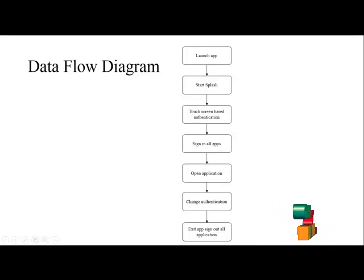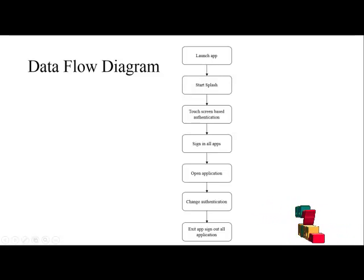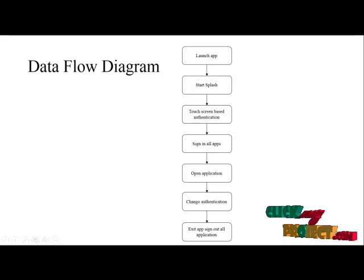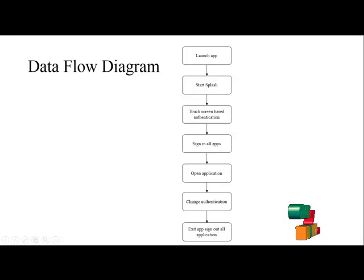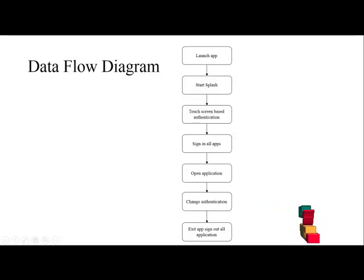Then, open all the applications in the list view. In the list view, we have to show the multiple applications which are available in the mobile, which are installed in the mobile. There is also an option to change the authentication. If you want to change the authentication password, pixel based password means we can change the pixel password. After that, we have to exit from the app.